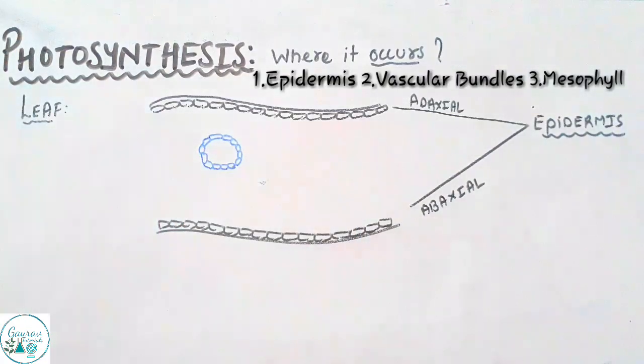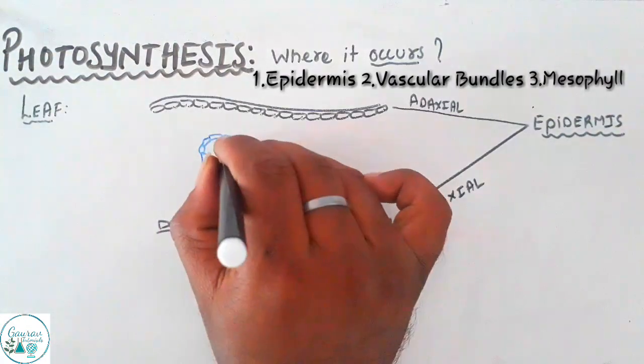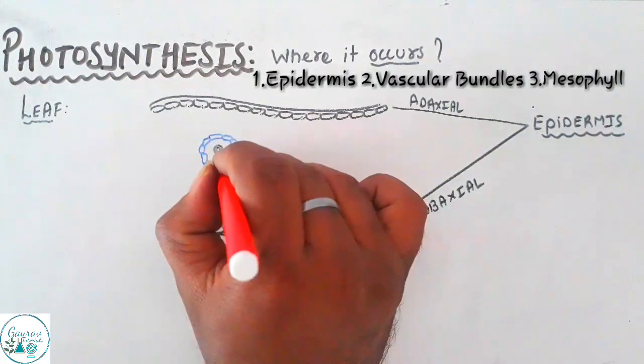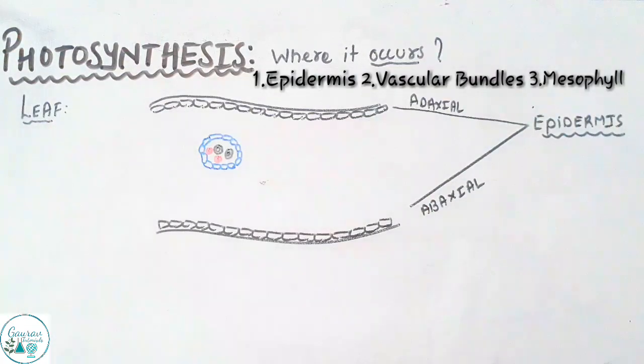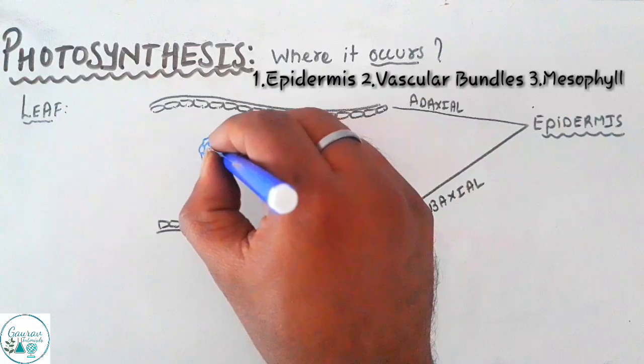The adaxial epidermis would have a thick layer of cuticle with small amount of stomatas out there, whereas the abaxial would have thin layer of cuticle with large number of stomatas.